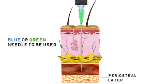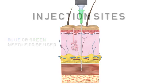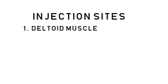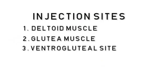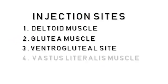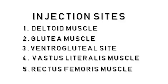The intramuscular injection can be administered on five sites: the deltoid muscle, the glutea muscle, the ventrogluteal site, the vastus littoralis muscle, and the rectus femoris muscle.